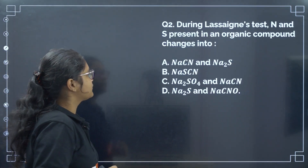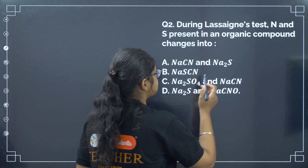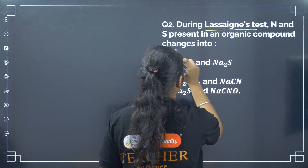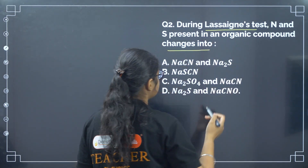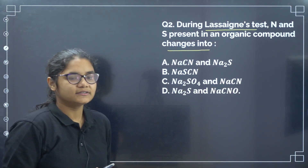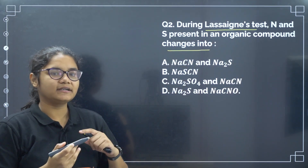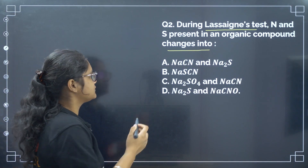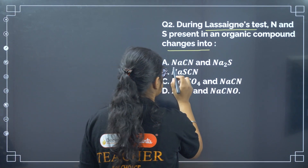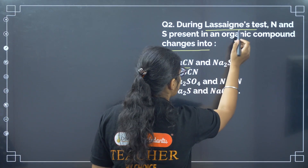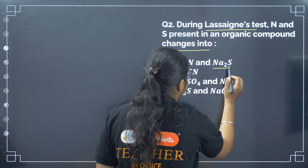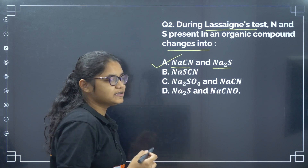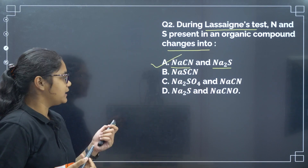Next question: during Lassaigne test, nitrogen and sulfur present in an organic compound changes into? This is a test to detect nitrogen and sulfur. Nitrogen changes to NaCN and sulfur changes to Na2S. Correct answer is option number A.